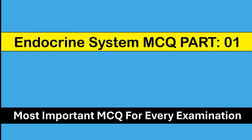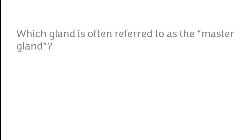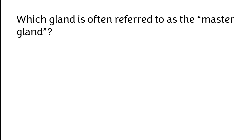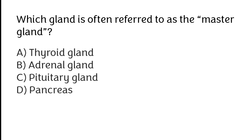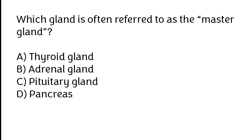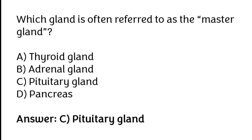Welcome to our channel MCQ1. In today's topic, we will cover endocrine system MCQ part 1. Which gland is often referred to as the master gland? Thyroid gland, adrenal gland, pituitary gland, pancreas. The correct answer is option C: pituitary gland is often referred to as the master gland.